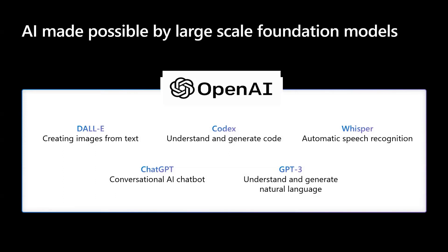Whisper allows automatic speech recognition. ChatGPT is a conversational AI chatbot. And GPT-3 is for text completion — a set of models that can understand and generate natural language.